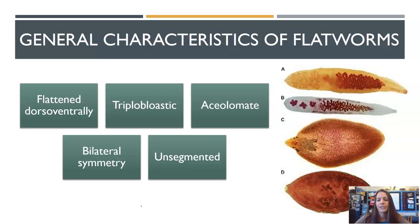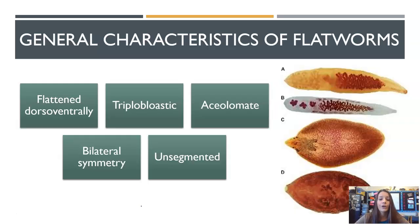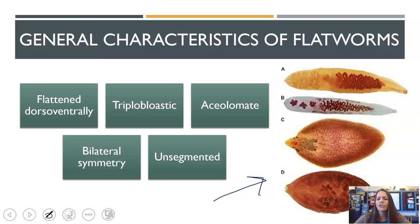Here are some general characteristics of flatworms. They are flattened dorsal-ventrally — dorsal-ventral is back and stomach — so flattened basically top to bottom, not side to side. They are triploblastic, meaning three body layers; acoelomate, so they do not have a true coelum; and they are bilaterally symmetrical, which is the first animal we're talking about that is bilateral. They are also unsegmented. Here are just a few examples of various flatworm species.